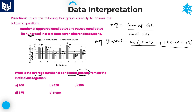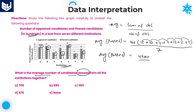Divided by the number of observations — that is 7 institutions. Adding all values: 12 + 10 = 22, + 4 = 26, + 4 = 30, + 12 = 42, + 2 = 44, + 5 = 49. So 49 × 100 = 4900, divided by 7, equals 700. The average number of students who passed from all institutions together is 700. Option A is the right answer.